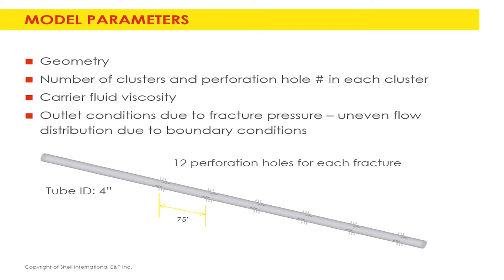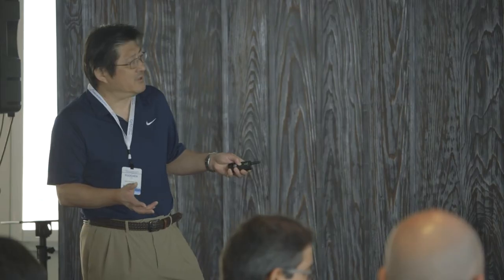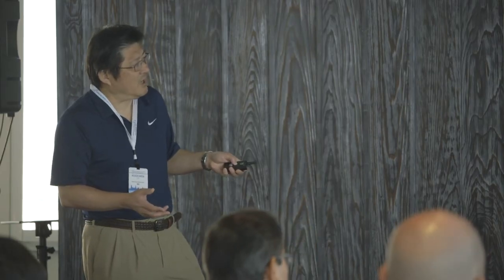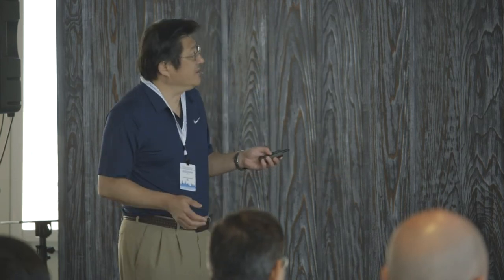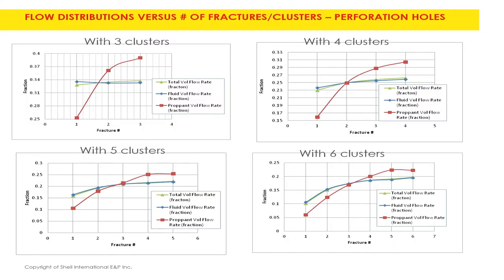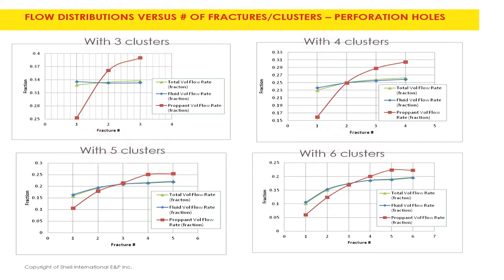Each cluster has a total of 12 holes, and this is another factor we can play with - how many holes should there be, and how many cluster sections should we perforate to maximize or optimize the sand distribution. These are some examples: instead of six or twelve, you try three, four, five, and six, and see how the sand distribution looks.